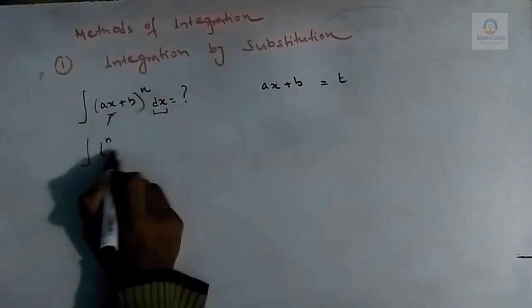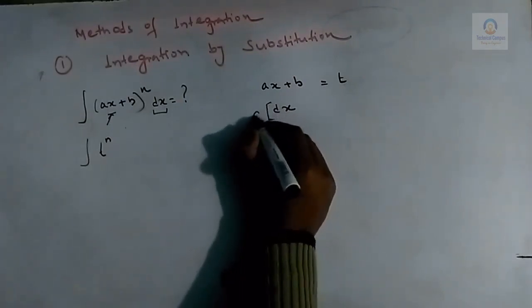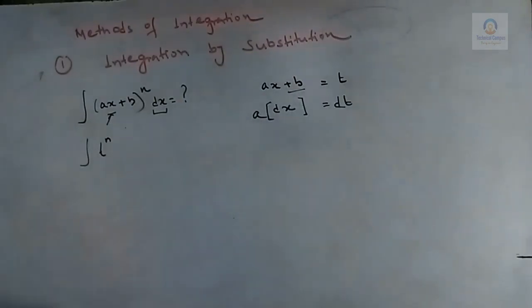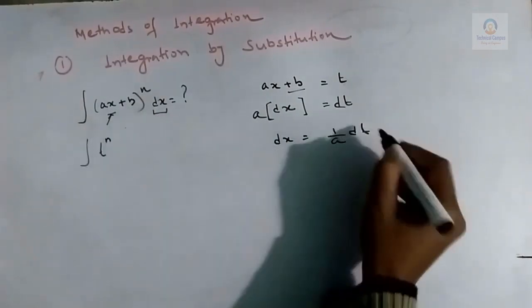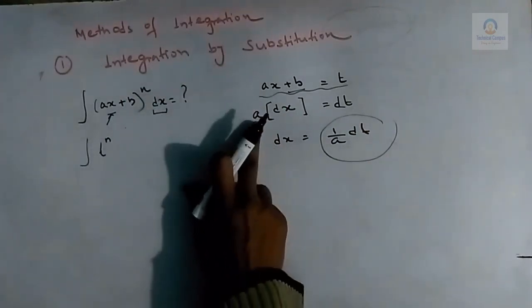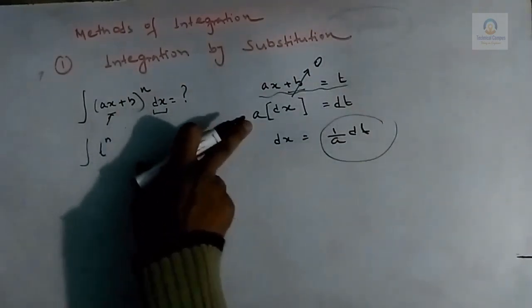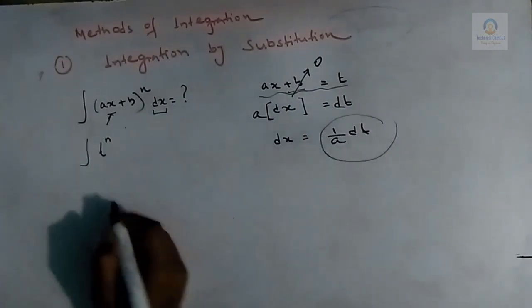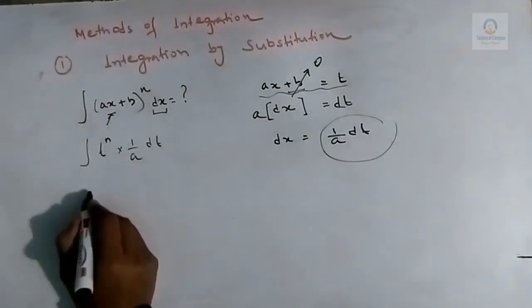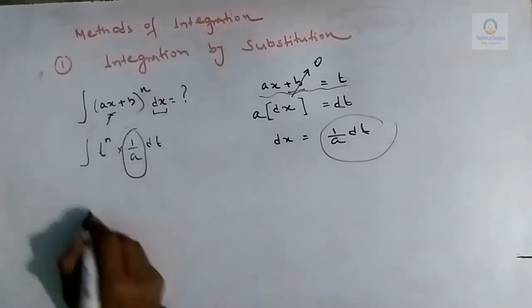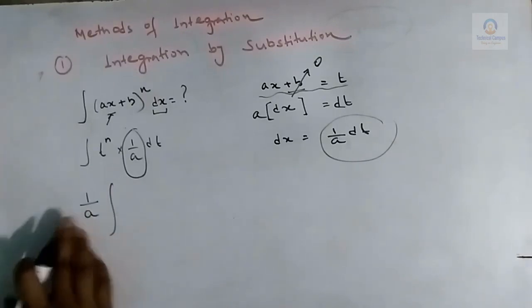If we differentiate t = ax + b with respect to x, we get a·dx = dt, so dx = (1/a)·dt. We can now replace the value of dx with (1/a)·dt in the integral.